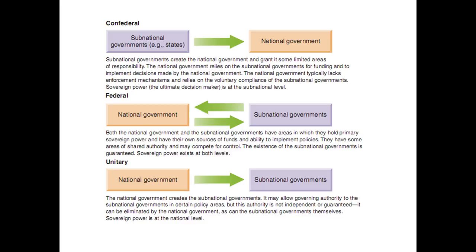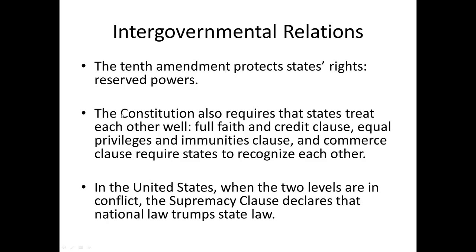To sum up the discussion so far: in confederal systems, power flows from sub-national units to the national government. In a unitary system, the national government vests some power into sub-national units but maintains pretty much full control. In a federal system, you have sovereignty in both directions and powers that are interacting between both levels. Within the new constitution, we'll talk about some of the ways in which federalism is outlined.